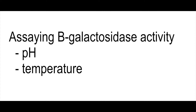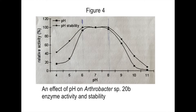After understanding the new structure of the beta-galactosidase enzyme, they next tested the effects of pH and temperature on the activity of the enzyme. Looking at Figure 4, they show that the pH relative activity as well as the pH stability of the enzyme are optimized around a pH range of 6 to 8, with a constant decrease of both the relative activity and the stability outside of this range.